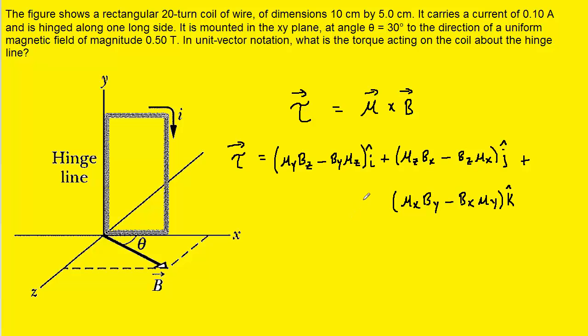So here is the cross product between the magnetic dipole moment and the magnetic field in its full unit vector expanded form. You might want to pause the video and look it over just to make sure it makes sense.